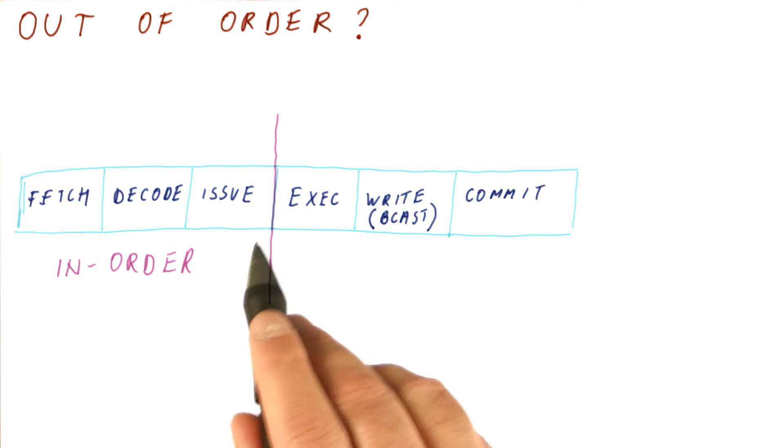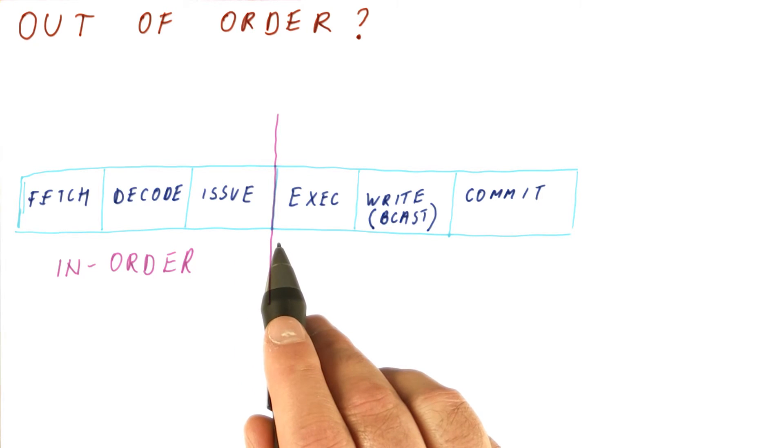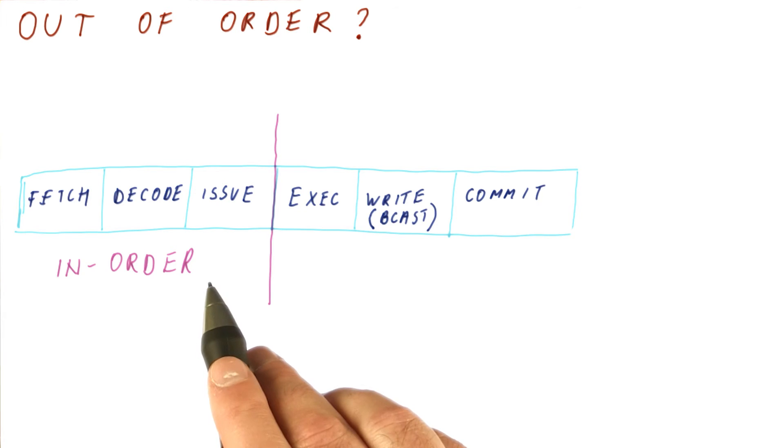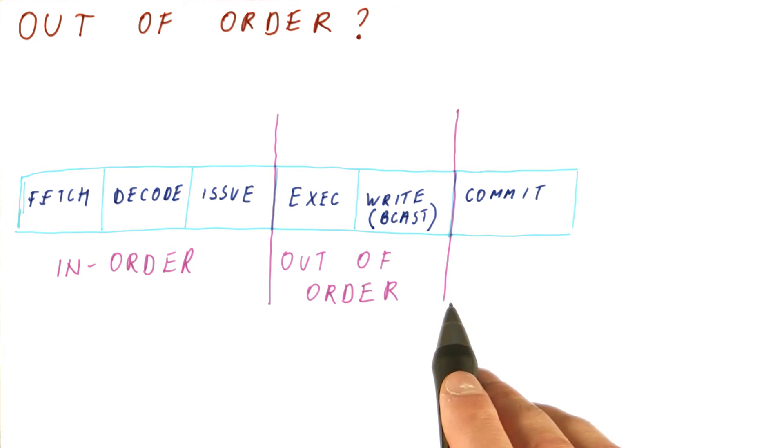Now that we have issued instructions to reservation stations and they're waiting for execution, they're going to execute in the order of data dependencies, not necessarily in program order. So the execution and writing of results are happening out of order.